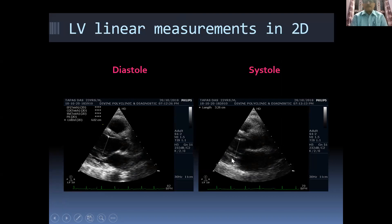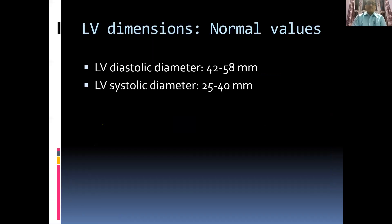Do not try to derive the ejection fraction from diastolic and systolic linear dimensions alone — just document them. The ejection fraction will be discussed separately. Normal LV diastolic diameter is 42 to 58 mm and systolic diameter is 25 to 40 mm.